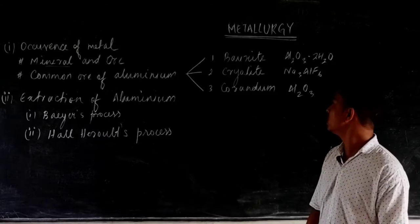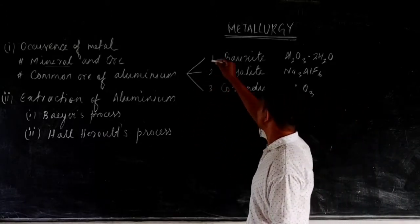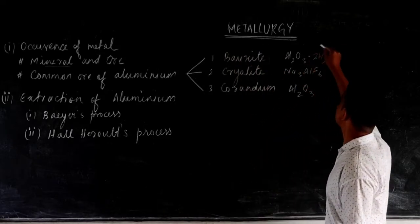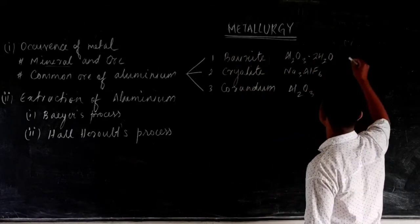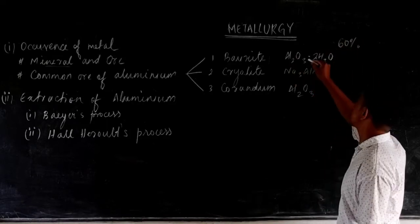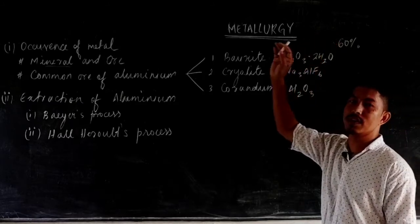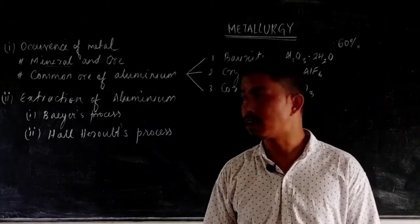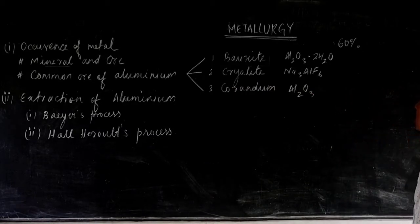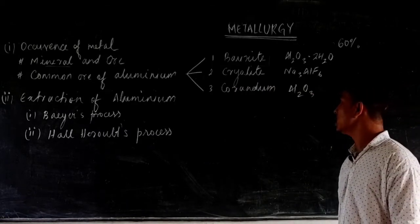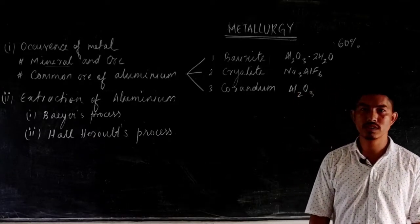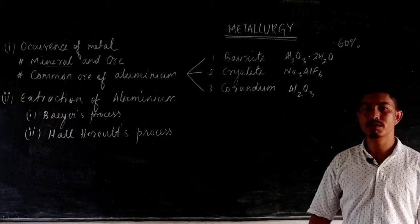During the extraction of aluminium, we use bauxite because it contains 60% aluminium oxide (Al₂O₃), with the rest being impurities like sand, silica, and other particles. Though cryolite and corundum also contain aluminium, the percentage of aluminium that can be extracted from them is much less than that obtained from bauxite.